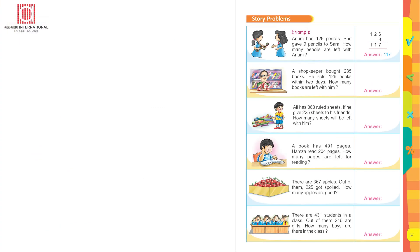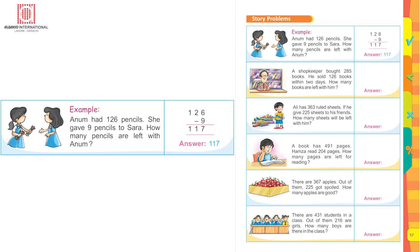Here are the story problems. Anam had 126 pencils; she gave 9 pencils to Sarah. How many pencils are left with Anam? Write 126 at the top and subtract 9. You cannot subtract 9 from 6, so borrow 1 ten from 2 tens — that makes 16 ones, leaving 1 ten. 16 minus 9 is 7, 1 ten as it is, 100 as it is: the answer is 117. Now you are capable of attempting the rest of the problems yourselves.